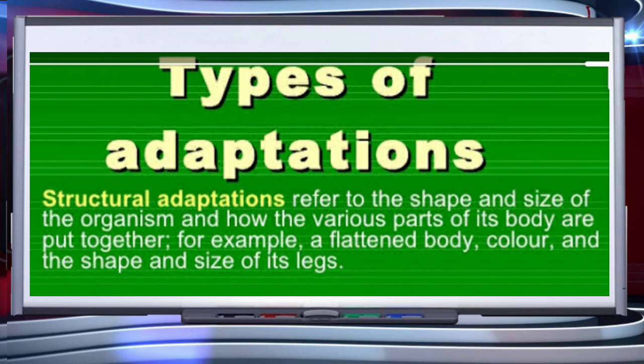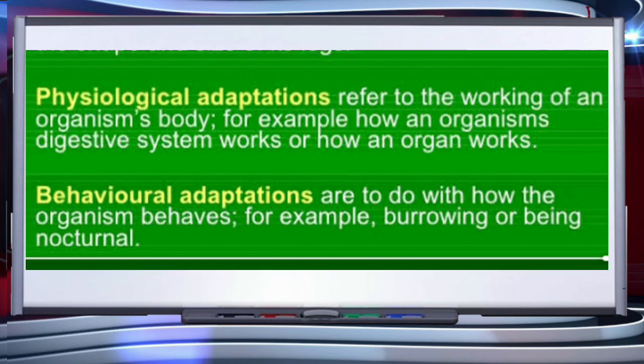Now let's talk about types of adaptations. Number one: structural adaptations. It refers to the shape and size of the organism and how the various parts of its body are put together. For example, a flattened body, color of the body — mimicry is the best example to understand body color. Similarly, the size and shape of the legs of some organisms are also good examples of structural adaptations.